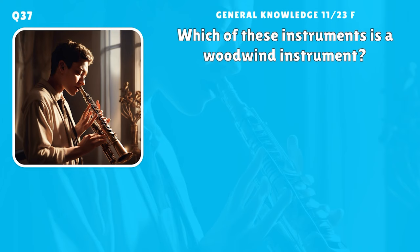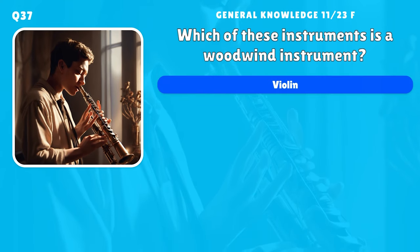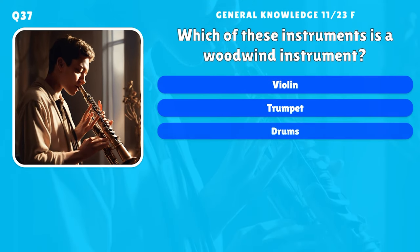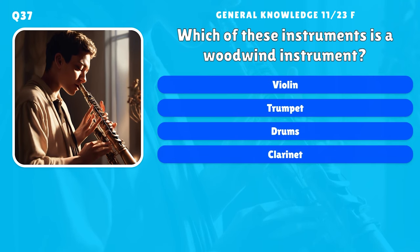Which of these instruments is a woodwind instrument? A) Violin, B) Trumpet, C) Drums, D) Clarinet.